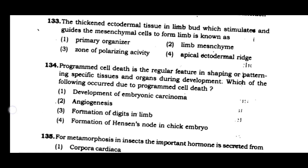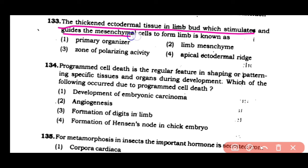Question number 133: The thick ectodermal tissue in the limb bud which stimulates and guides mesenchymal cells to form the limb is known as — (1) primary organizer, (2) limb mesenchyme, (3) zone of polarizing activity, (4) apical ectodermal ridge. The correct answer is option 4. The apical ectodermal ridge stimulates mesenchymal cells to form the limb.